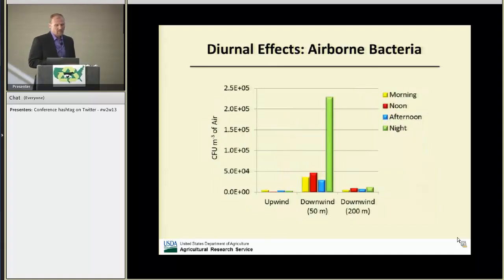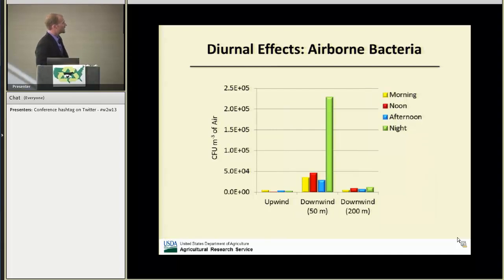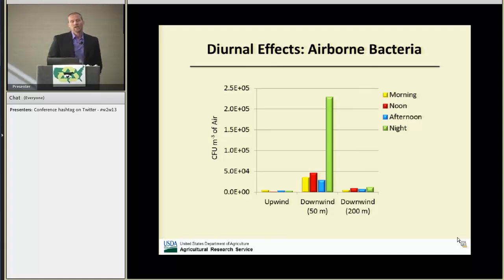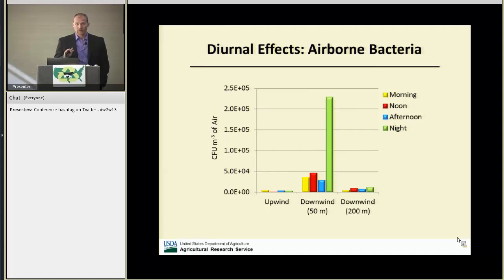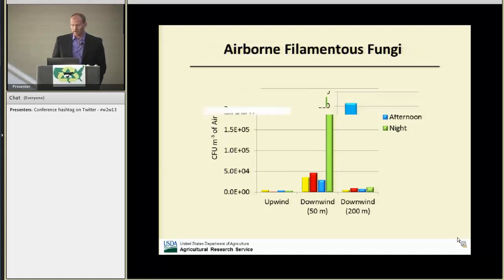Here are the diurnal effects on airborne bacteria. At the downwind location, you see a very distinct spike at nighttime. Why is this occurring? You tend to have more stable atmospheric conditions, cattle are shuffling around, and lower wind speeds — so you generally have a much higher bacterial load in the air.